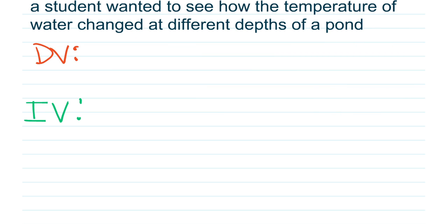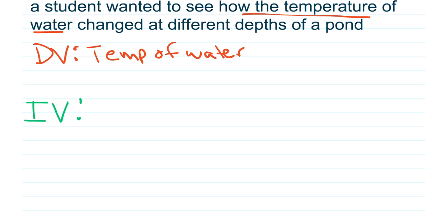Here's a different scenario — I would suggest pausing the video and trying to figure out the dependent variable and independent variable for yourself. The situation is: a student wanted to see how the temperature of water changed at different depths of the pond. I find it easiest to figure out the dependent variable first — what he's measuring is how the temperature of the water had changed. What he was changing was the depth of the water he was looking at.